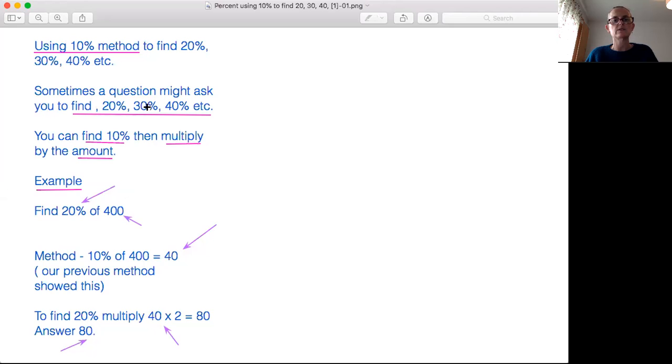And if we wanted to find 30% we would times 40 by 3. If we wanted to find 40% we would times 40 by 4, etc. So if you want to find a large percentage more than 10% and it is a zero figure which is in the tens, you divide by 10 and then you multiply by the amount.